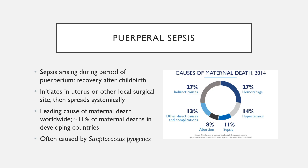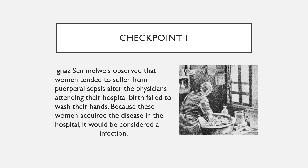That brings us to our first checkpoint. We look back at chapter one and Ignaz Semmelweis, who observed that women tended to suffer from puerpural sepsis after physicians attending their hospital births failed to wash their hands before helping to deliver the baby. Because these women acquired the disease in the hospital, how would we describe that infection?